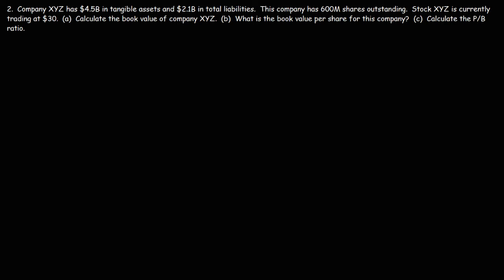Number 2. Company XYZ has $4.5 billion in tangible assets and $2.1 billion in total liabilities. This company has 600 million shares outstanding, and the stock is currently trading at $30. Calculate the book value of company XYZ. The book value is the difference between the tangible assets and the total liabilities.